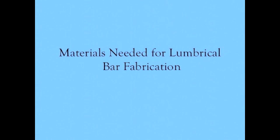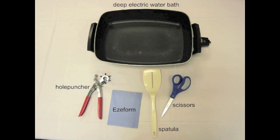These are the materials you will need to fabricate the lumbrical bar splints. You will need a deep electric water bath, a hole puncher, a piece of easy form material, a spatula, and a pair of scissors.